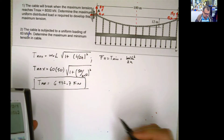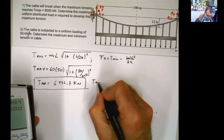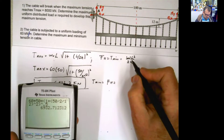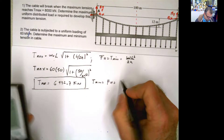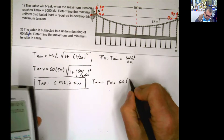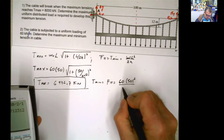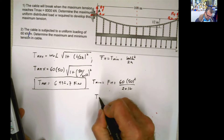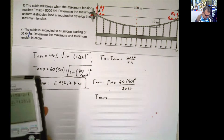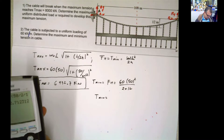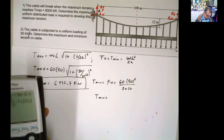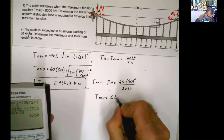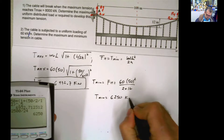Look how easy this problem is. T_min equals FH equals W times L² divided by 2H. That's 60 times 50 squared, which is 2500, divided by 24 — equals 6250 kilonewtons.